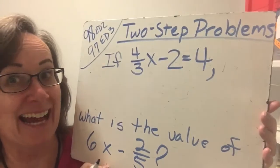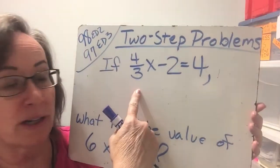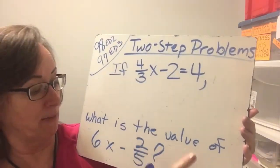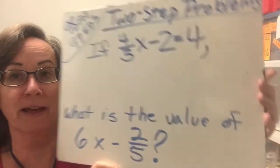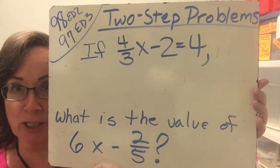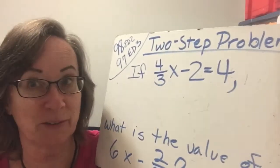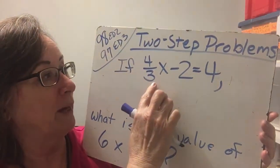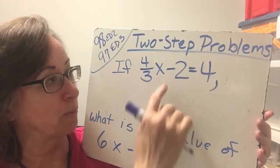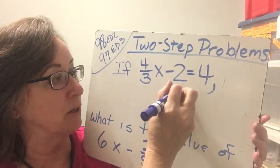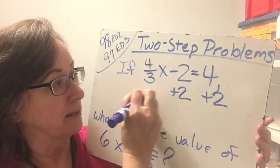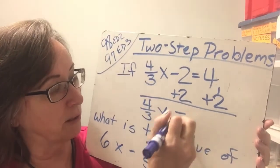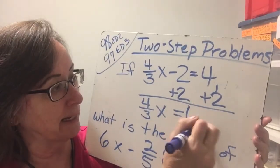Here is our last example. If 4 thirds x minus 2 equals 4, what is the value of 6x minus 2 fifths? There is the example, and now we will do it. We have to figure out the clue to get the answer here. So we need to get the 4 thirds x by itself. So we need to get rid of the negative 2. We're going to add a 2 to cancel it out. So now we get 4 thirds x equals 4 plus 2 is 6, and this cancels out.